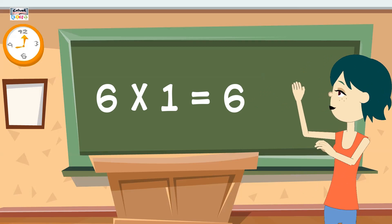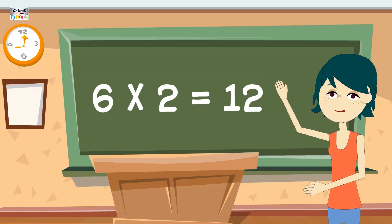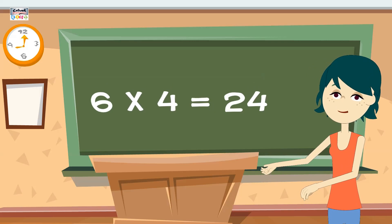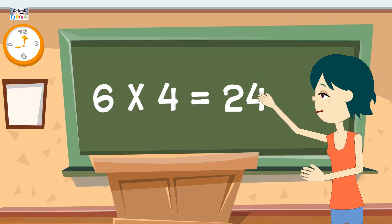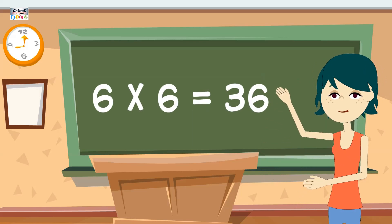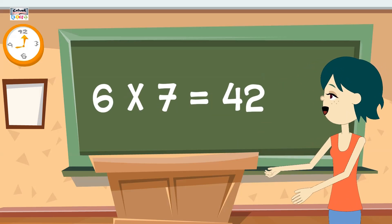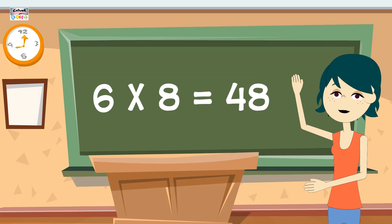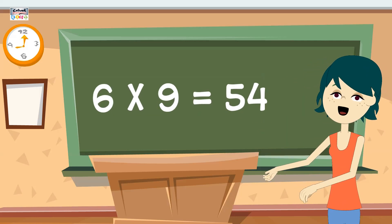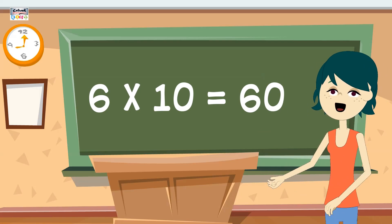6 ones are 6, 6 twos are 12, 6 threes are 18, 6 fours are 24, 6 fives are 30, 6 sixes are 36, 6 sevens are 42, 6 eights are 48, 6 nines are 54, 6 tens are 60.